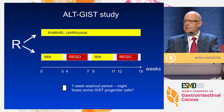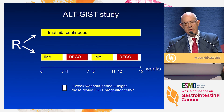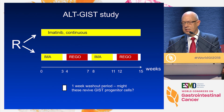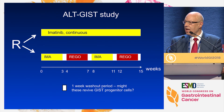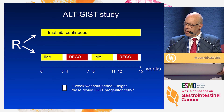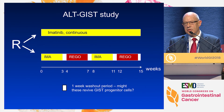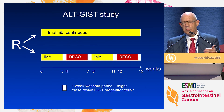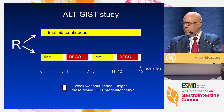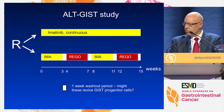The other thing that's happened in the past 12 months is a study conducted by the Australasian Gastrointestinal Trials Group in collaboration with the Scandinavian group and the EORTC — a randomized phase two trial comparing continuous imatinib to imatinib alternating with regorafenib. That study completed late last year and will report at ASCO next year.